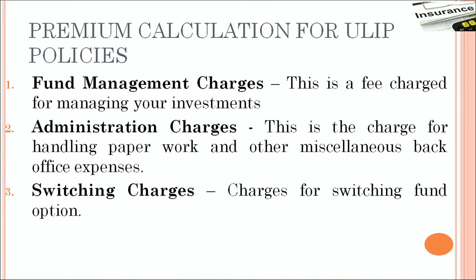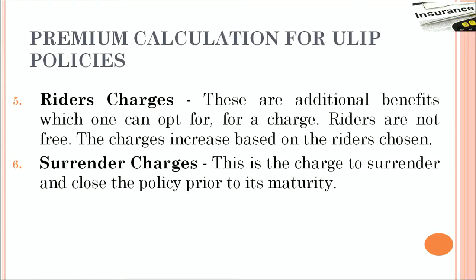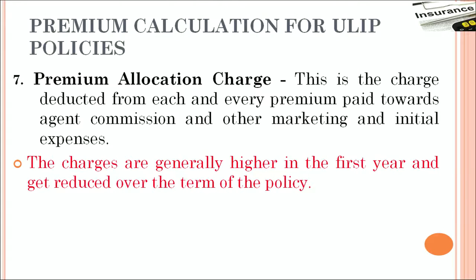There are also switching charges — if you want to switch from one fund to another, say from equity to balanced or growth fund, certain switches are free (say 4 switches in a year) but beyond that there would be switching charges. Rider charges — if you want additional riders like a term rider, accidental death benefit rider, or disability rider, some riders are inbuilt and free but for others you will have to pay extra premium. Surrender charges — this is the charge to surrender and close the policy before its maturity. Premium allocation charge — this is the charge deducted from each premium towards agent commission, marketing, and initial expenses, and these charges are higher in the earlier stages and keep reducing as you advance in your term with the policy.